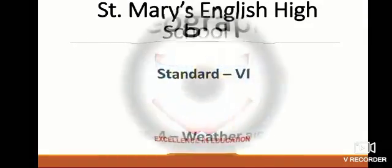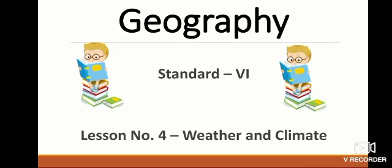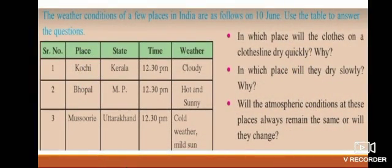Welcome, dear students. Geography, Standard 6, Lesson 4: Weather and Climate. The weather conditions of a few places in India are as follows on 10th June. Kochi is in the state of Kerala; Bhopal is in Madhya Pradesh; Mussoorie is in Uttarakhand. The time given for all three places is 12:30 p.m. The weather for Kochi is cloudy, for Bhopal it is hot and sunny, and for Mussoorie it is cold with mild sun.